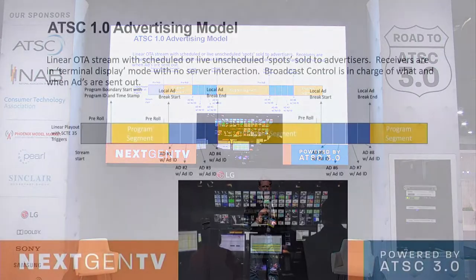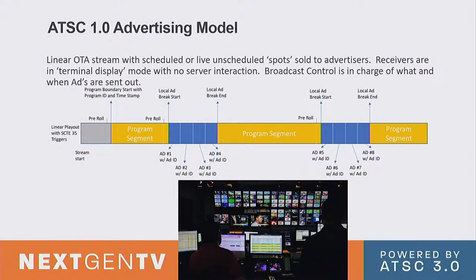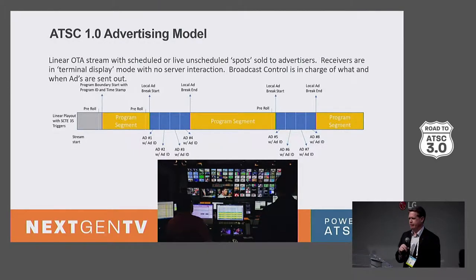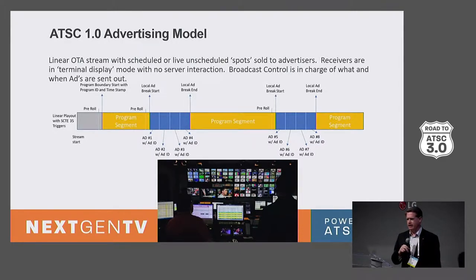So where are we at today? The ATSC 1.0 model is all controlled by a broadcaster — that's why there's a picture of a broadcast control center. They are in control with a linear feed. You start at the left with a program start, then you have a pre-roll to get the program up and running, which can be triggered with SCTE 35. Then we get into some optional ads as time rolls by.